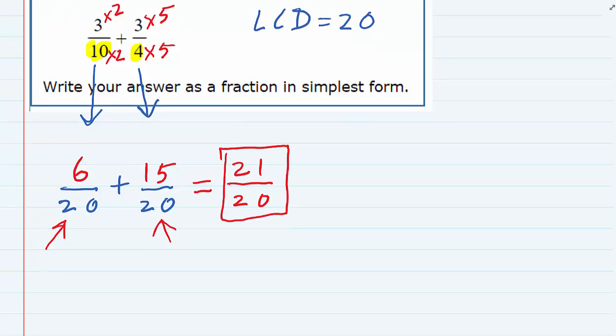The 21 over 20 is an improper fraction, but we don't need to worry about that at this point. The only question is, can we simplify it? And since there is no number other than 1 that will divide evenly into both 21 and 20, it is in its simplest form.